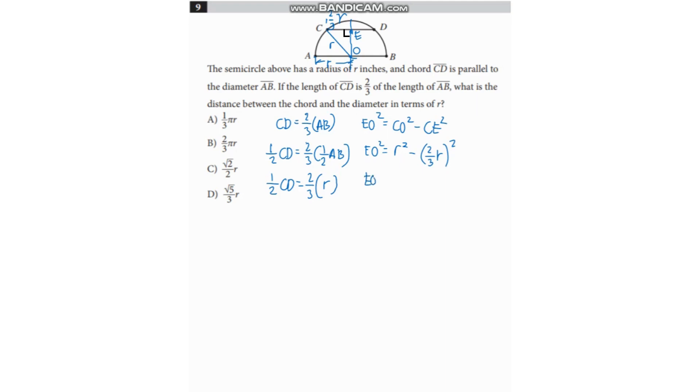EO squared is equal to R squared minus... If you square this, this becomes four over nine R squared. And EO squared is equal to... If you simplify this, you have nine as the LCD. And nine divided by one is equal to one times nine. So nine R squared minus... Nine divided by nine is equal to one times four. Four R squared.